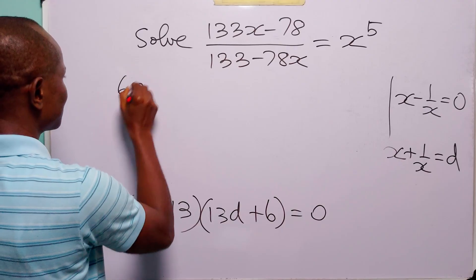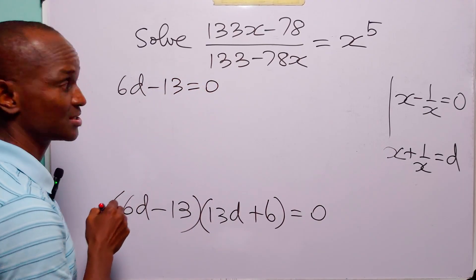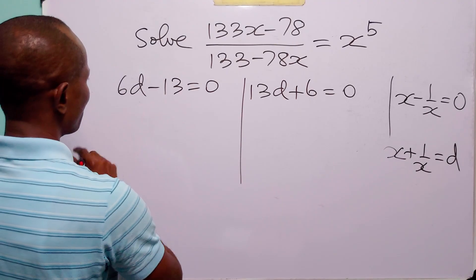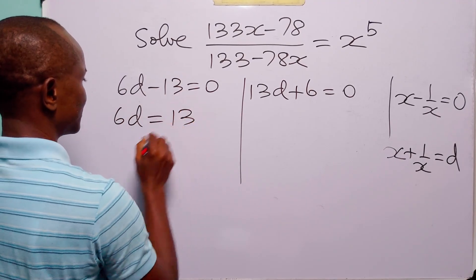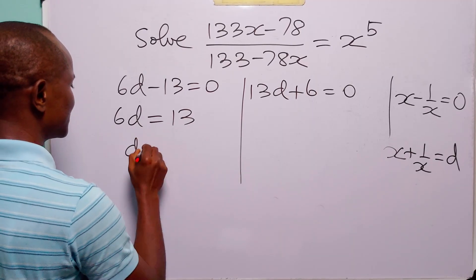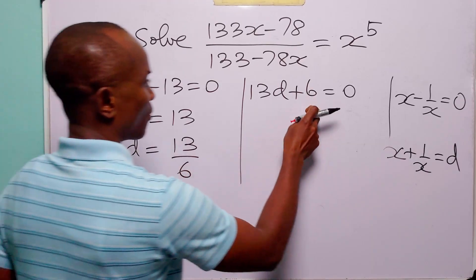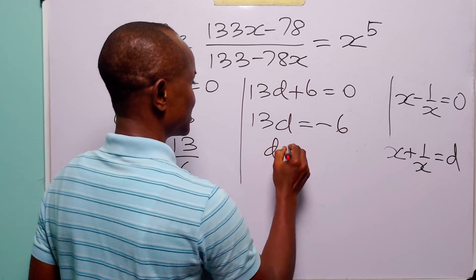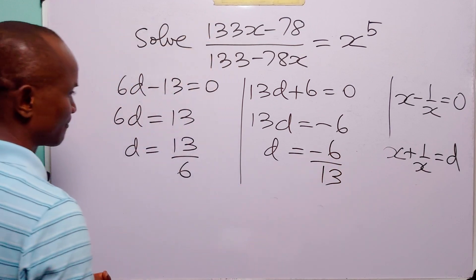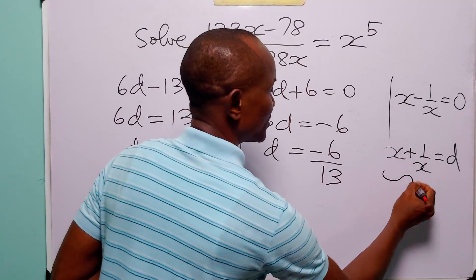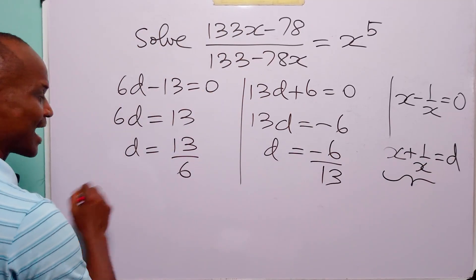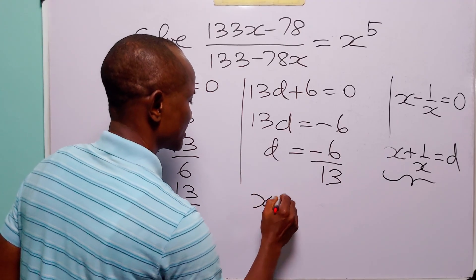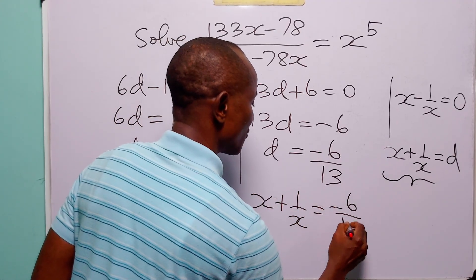From here, either 6d minus 13 equals 0, giving d equals 13 over 6, or 13d plus 6 equals 0, giving d equals minus 6 over 13. Recalling that d equals x plus 1 over x, we now have two equations: x plus 1 over x equals 13 over 6, or x plus 1 over x equals minus 6 over 13.